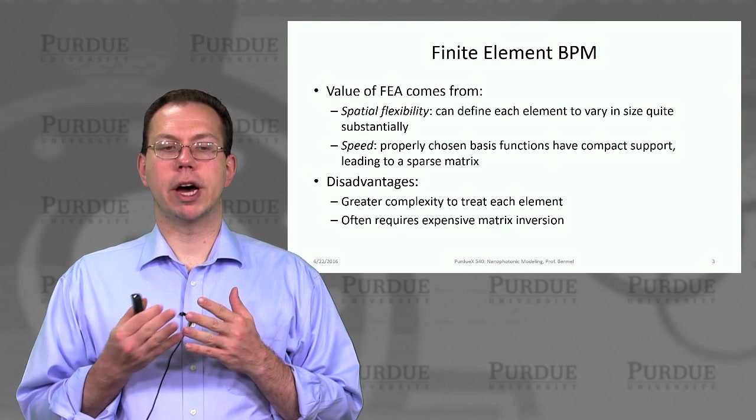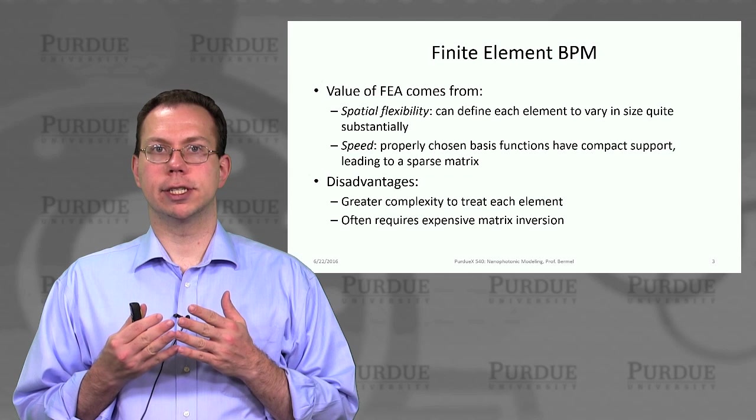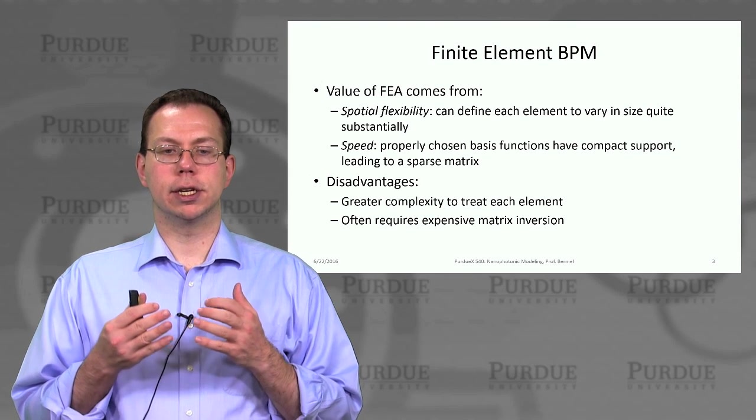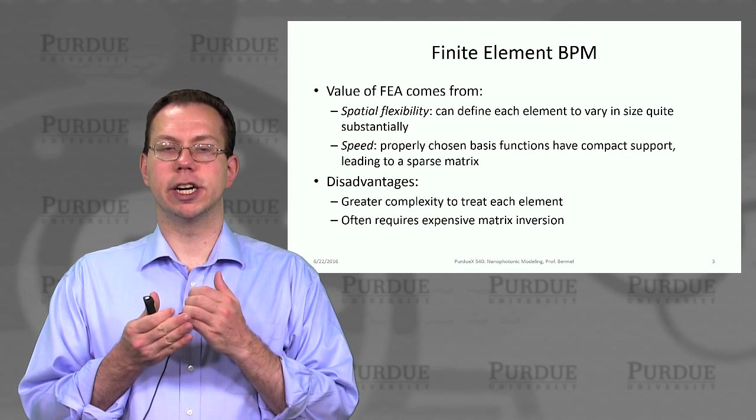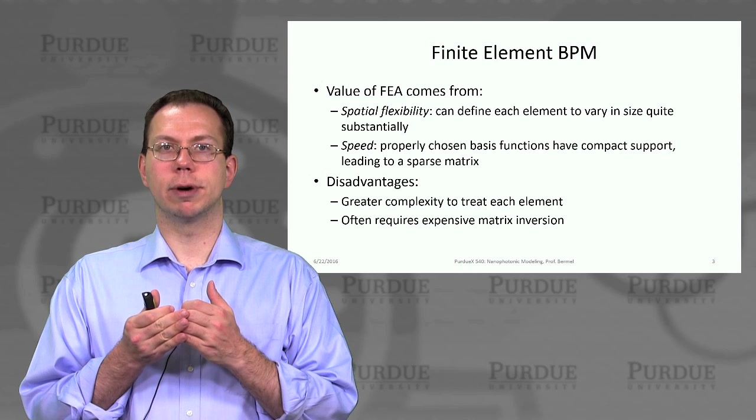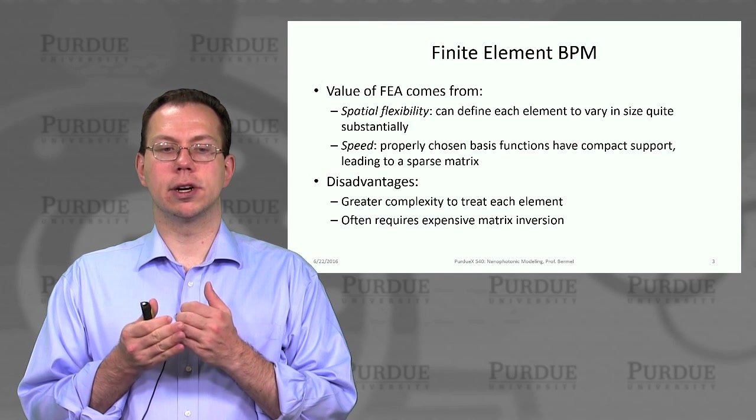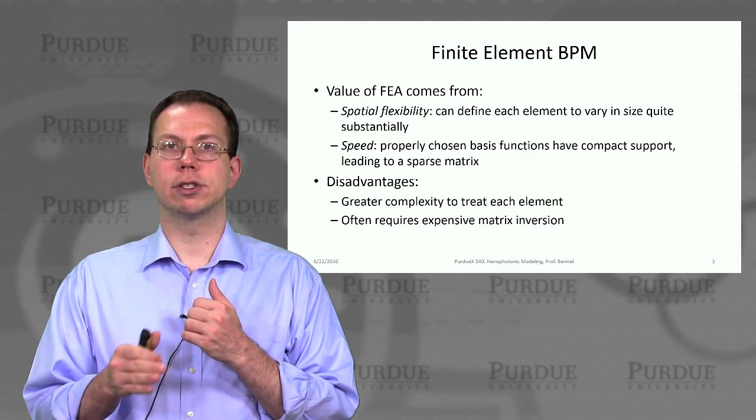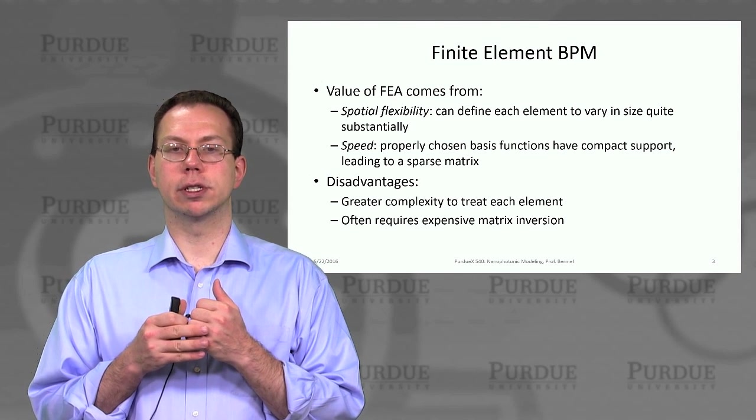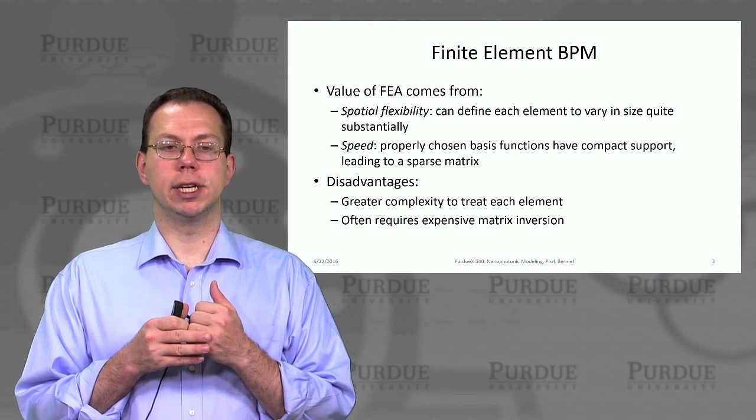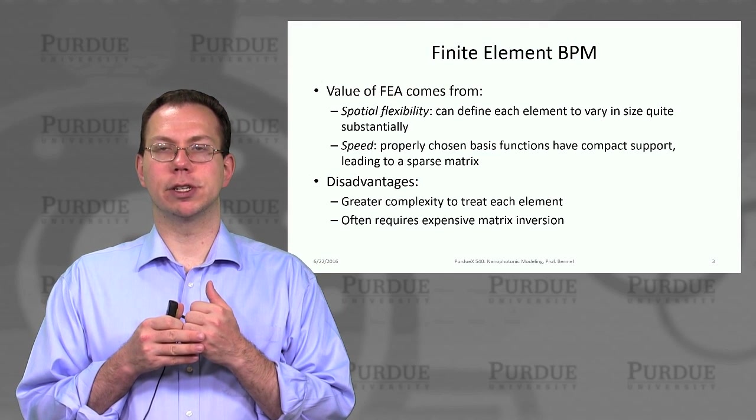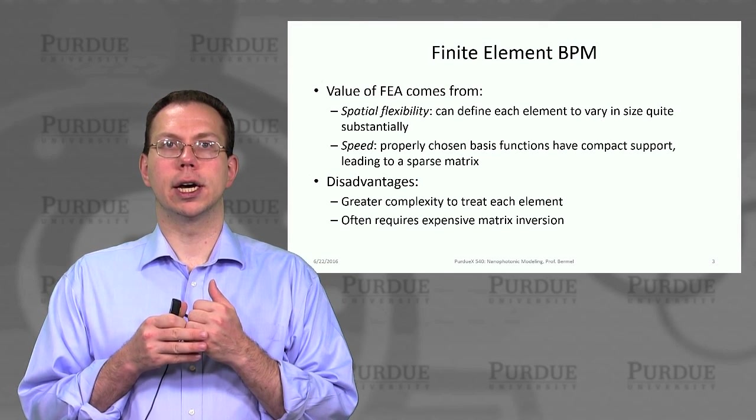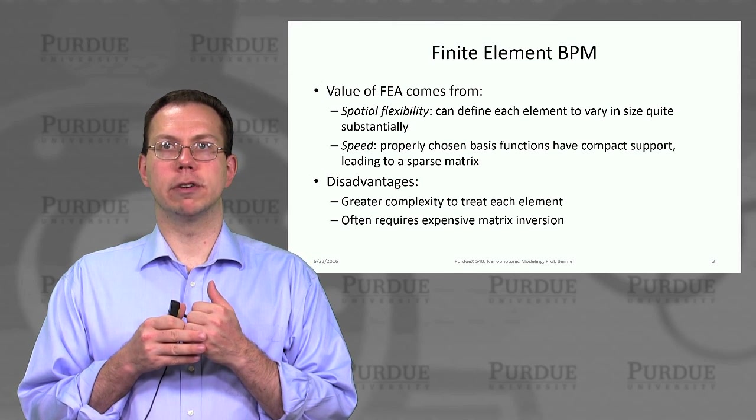And so the value of finite element analysis, like I mentioned, basically we can make elements vary in size so that some are smaller if we need them to be. But then also the speed is also kind of the downstream benefit, which is that you can have what's called compact support, which means that basically that stiffness matrix L that I just showed has only a small number of terms mostly near the diagonal.